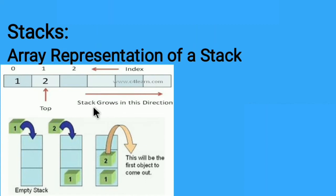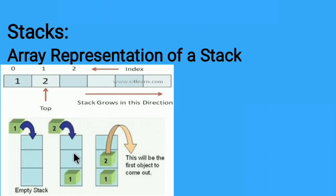The stack grows in this direction. In the diagram below, three elements are to be inserted into the array which is initially empty. We add the first element at the bottom, then insert the second element from the same end — only from one end called the top end. To remove the first element, we must first remove the second element, then the first. This is how the stack works.